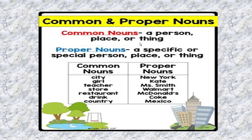But when you give a specific name to any of them — like New York, it is a particular name of a city. Kate, it is a particular name of a girl. Liz Smith, it is a particular name of a teacher. Walmart, it is a particular name of a store. McDonald's, it is a particular name of a restaurant. Coke, it is a specific drink. Mexico, it is a specific country. So these specific names which we are using, they become proper nouns.